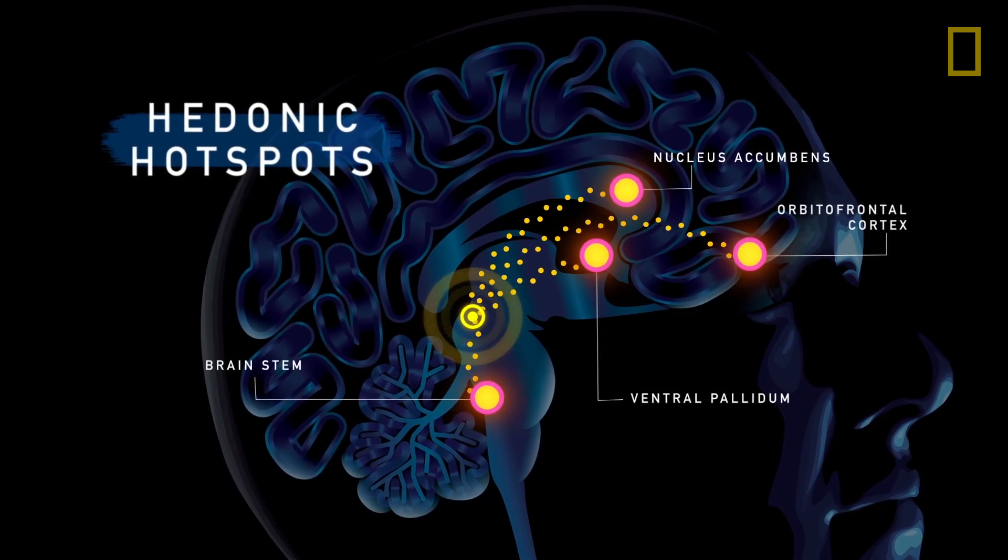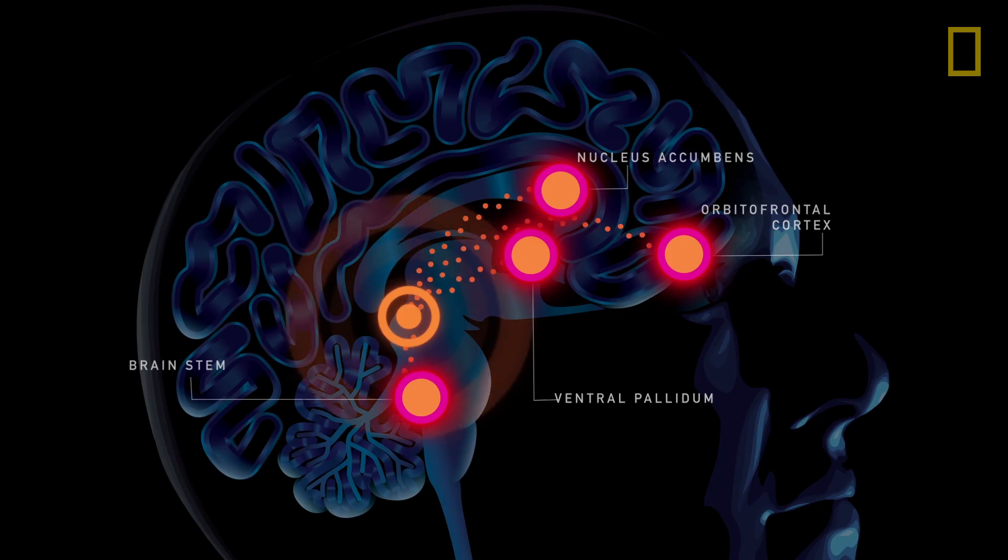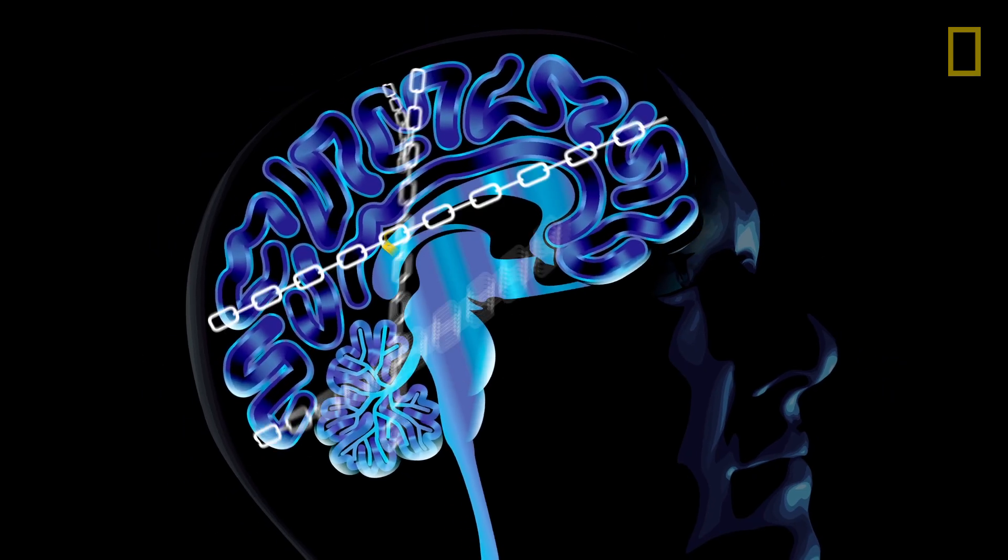When dopamine's craving circuitry overwhelms the pleasure hotspots, addiction occurs. Essentially, your reward system is hijacked.